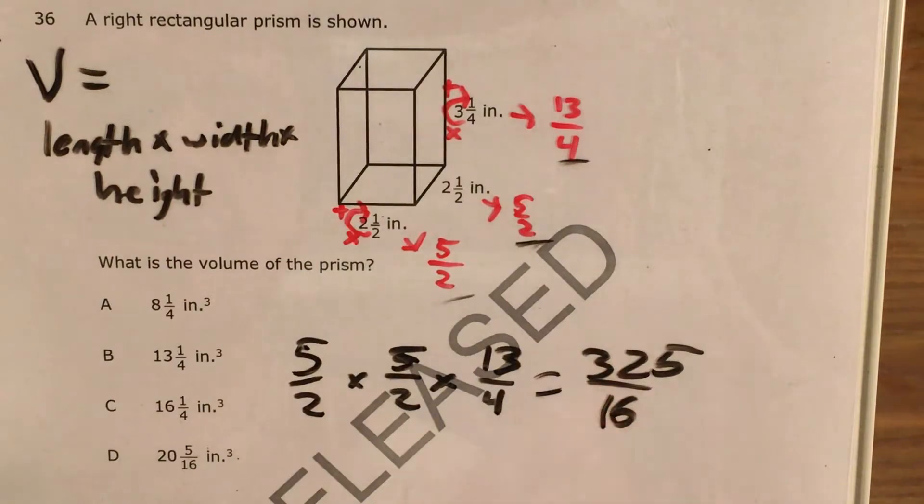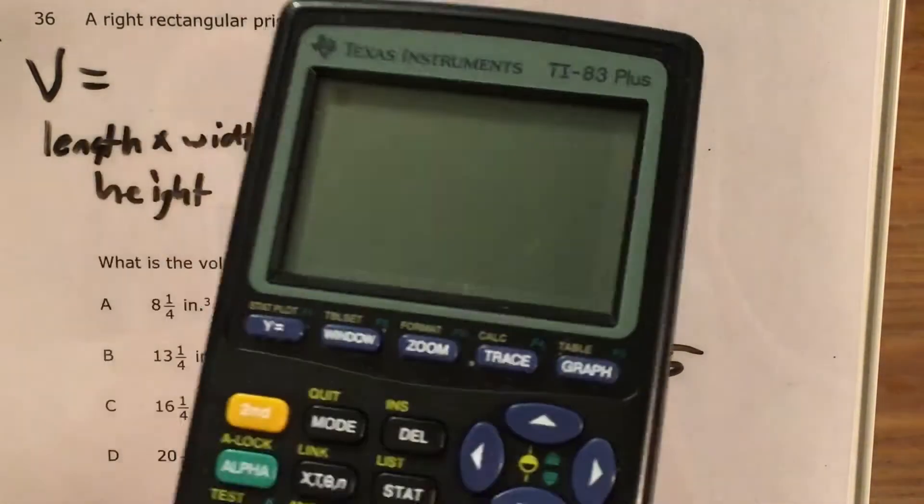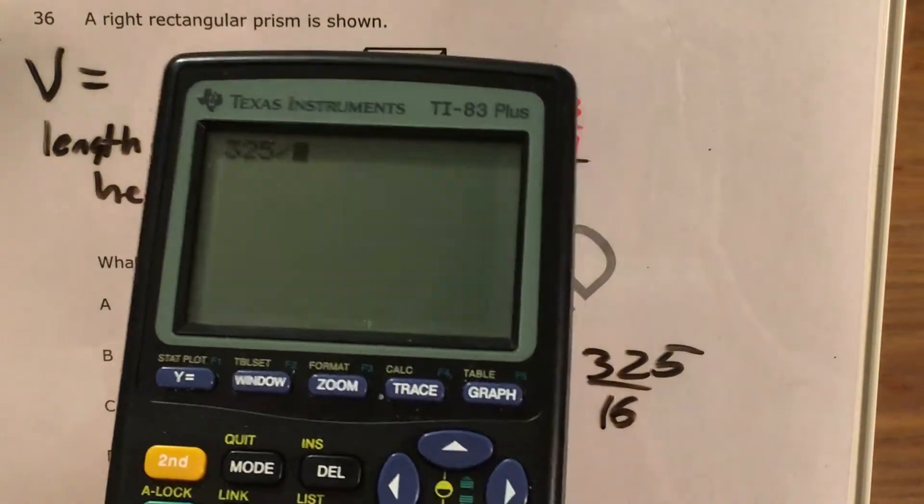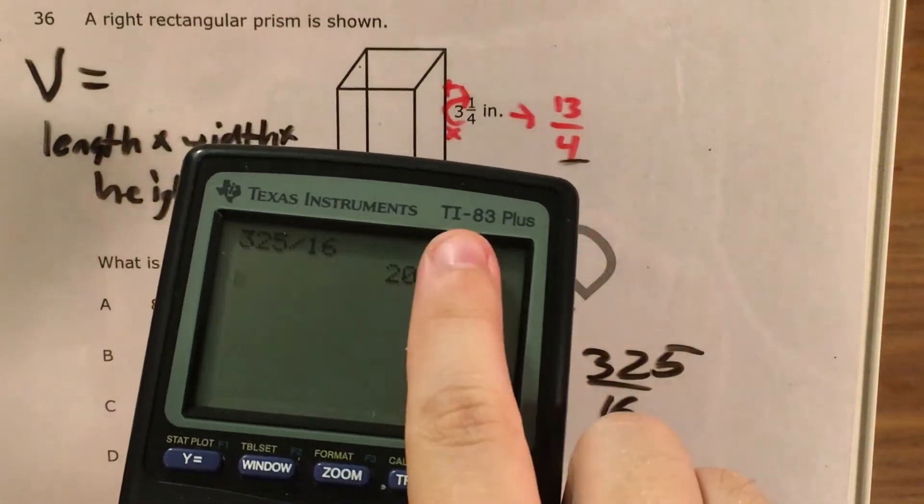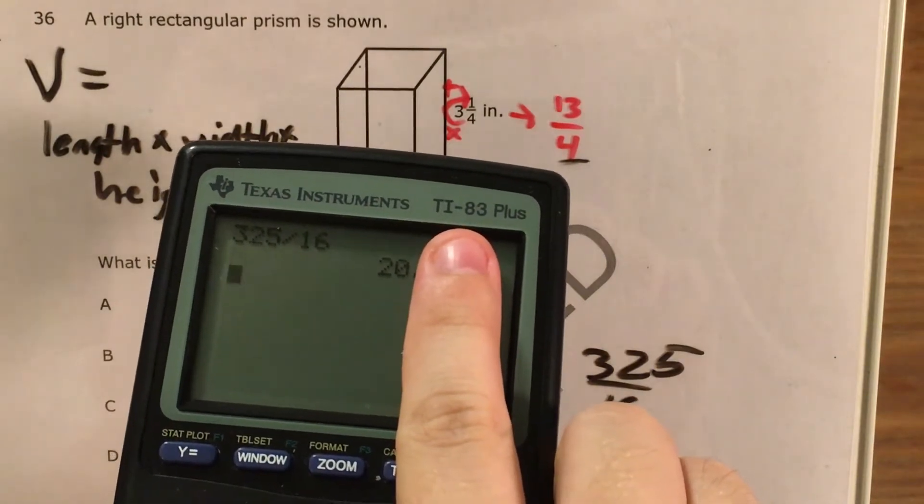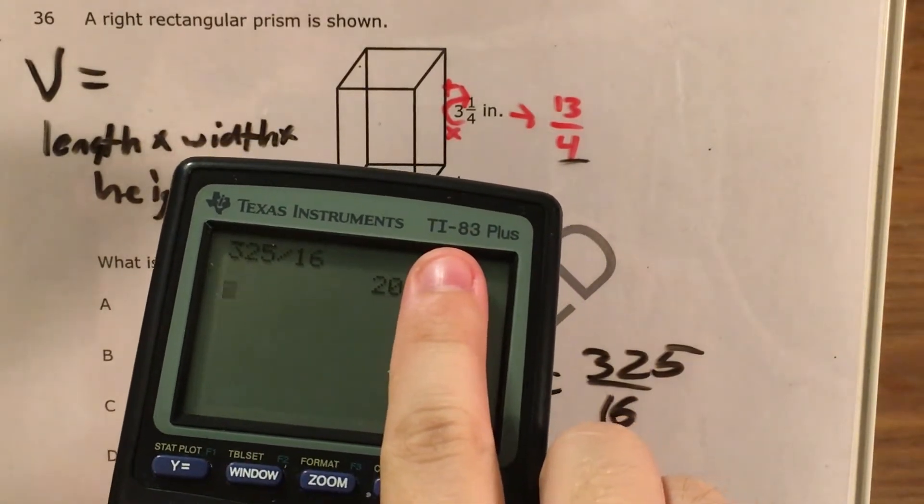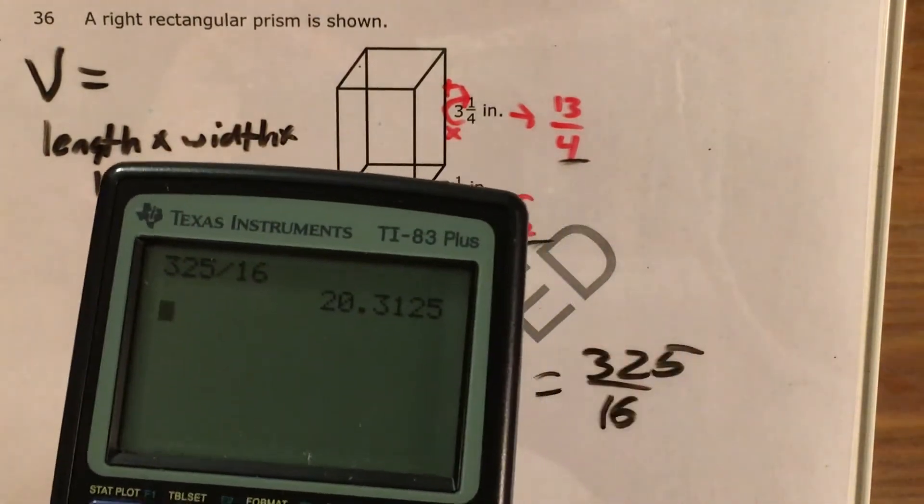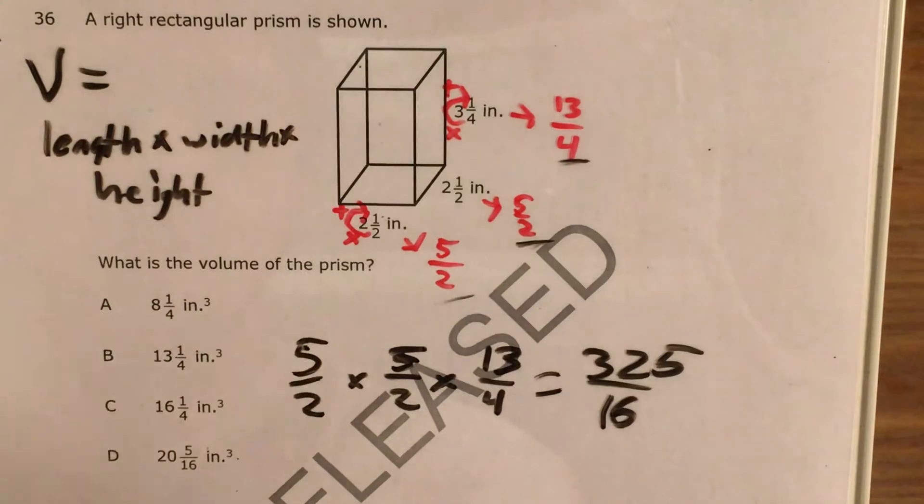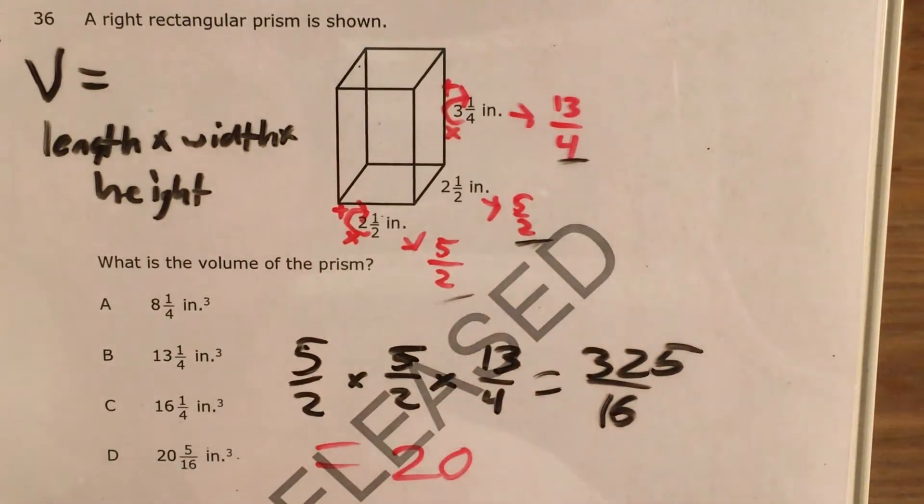So in order to do that, I need to figure out how many times does 16 go into 325. I will go ahead and do 325 divided by 16. I am only interested in this whole number because that is the number of times 16 will fit into 325 before I have to think about remainder and leftovers.